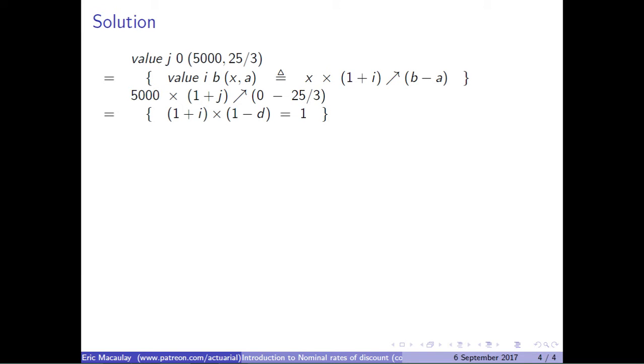Now we don't have the rate of interest but we do have the rate of discount. So if we let Q be the rate of discount per quarter compounded quarterly, then we have that this expression is equal to 5,000 times 1 minus Q to the power of minus 1, or to the power of 0 minus 25 over 3.